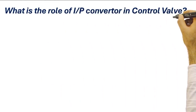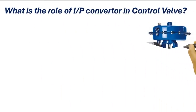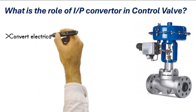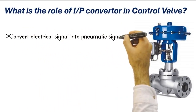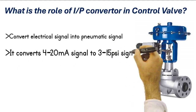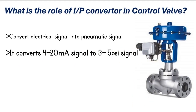What is the role of an I/P converter in the control valve? An I/P converter plays a crucial role in a control valve. It converts an electrical current signal into a pneumatic pressure output. Specifically, it converts a 4 to 20 milliamperes current signal to a linear 3 to 15 PSI pneumatic signal.